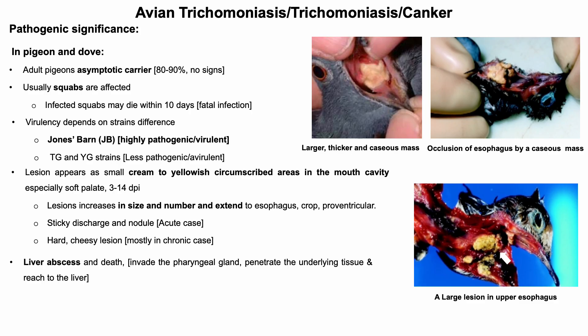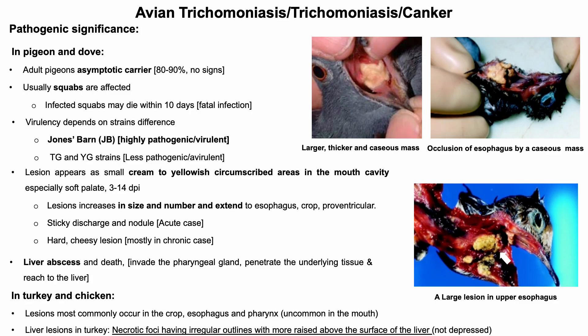Trichomonas gallinae may invade the pharyngeal gland and surrounding underlying tissues and reach the liver. Other organs such as the lungs can also be infected. In severe infections, birds may die due to liver abscess. Note that the digestive tract below the proventriculus is rarely involved. In turkey, lesions most commonly occur in the crop, esophagus, and pharynx, and are less commonly found in the oral cavity.